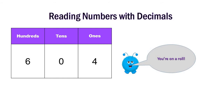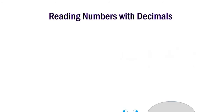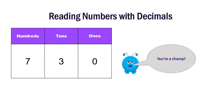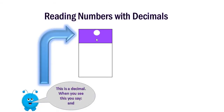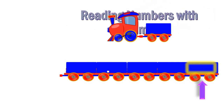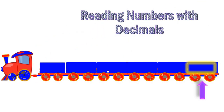It's 604, and this one is 730. Okay, here we have the decimal point. When we see the decimal point, we will say 'and.' Don't forget it please! Let's read some decimal numbers together.